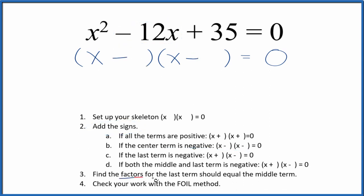Then we can find the factors for the last term, the 35, and they should equal the middle term. So the factors for 35, I know 5 times 7, that's 35, but 5 plus 7, that's 12. So I'm going to put a 5 here, 7 here.